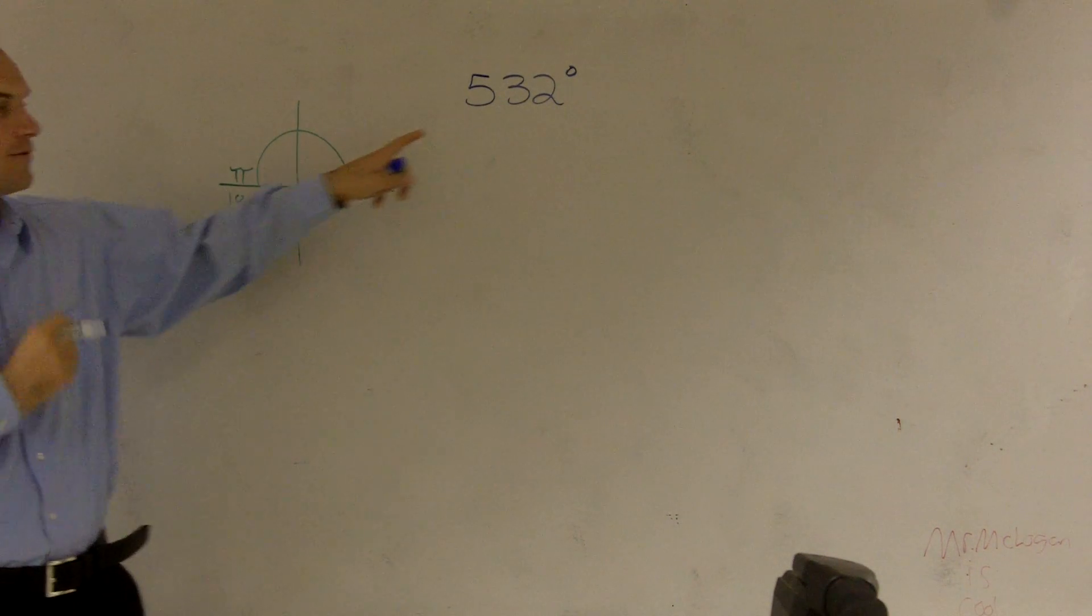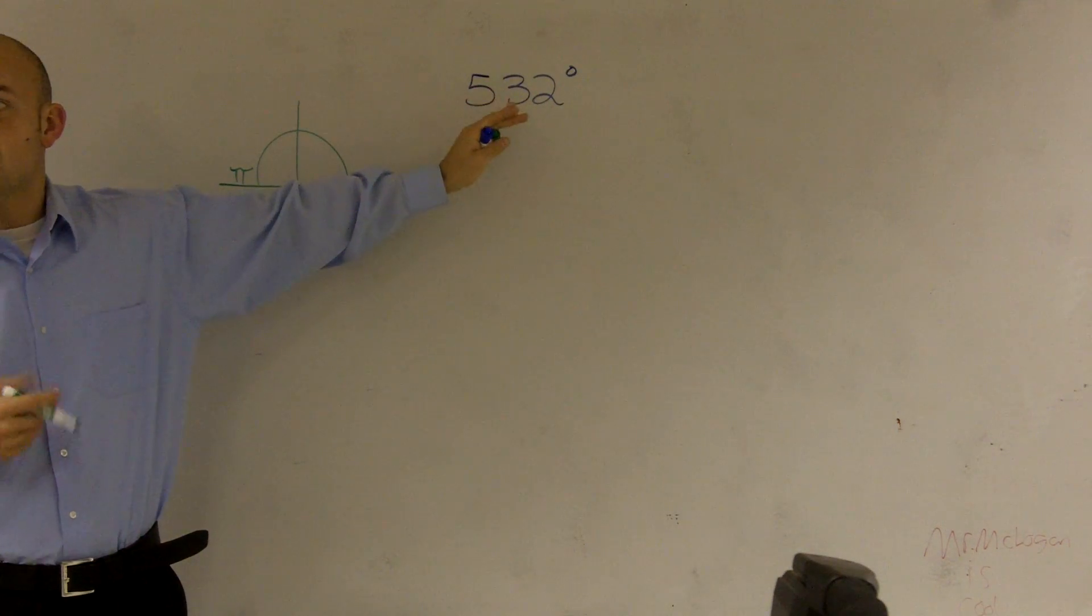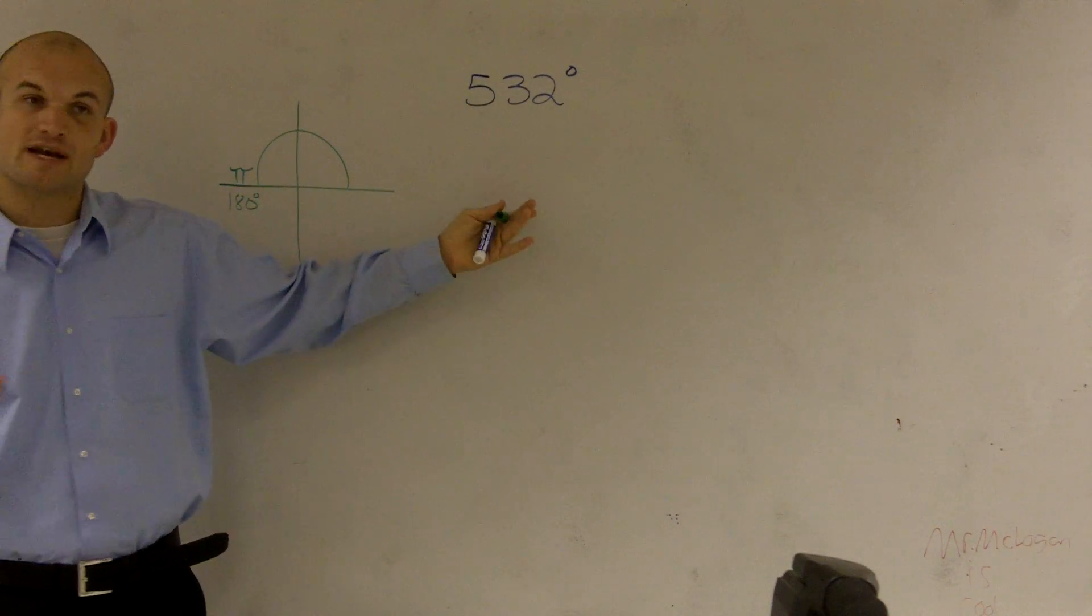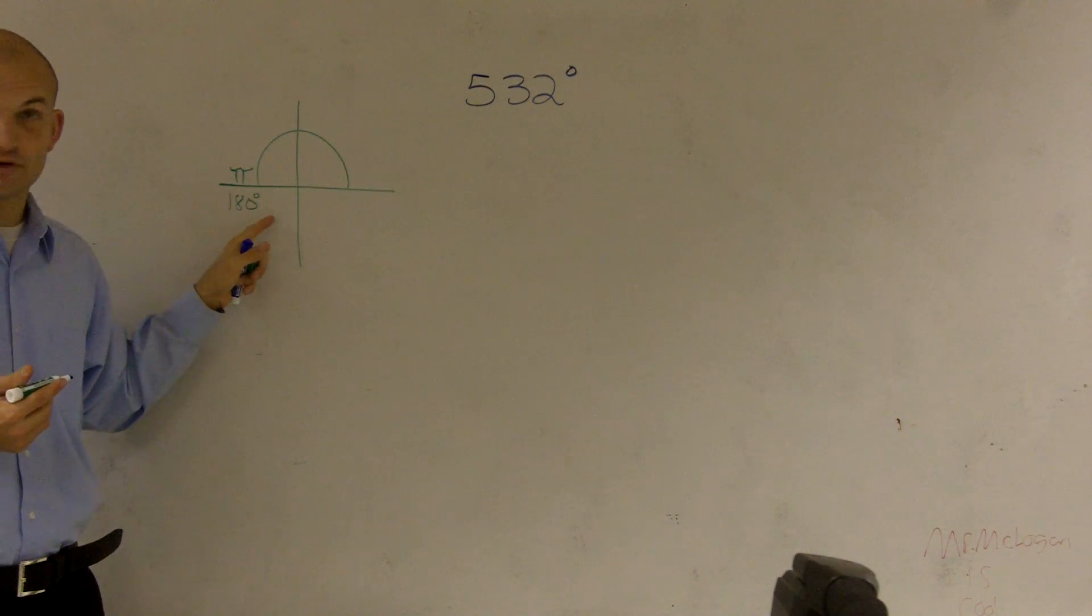So when you guys look at that, what I want to do, if I want to convert this degrees to radians, what I'm going to do is I'm going to use a ratio. And the ratio is pi is equal to 180 degrees.